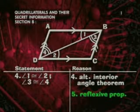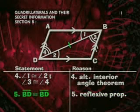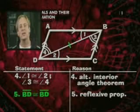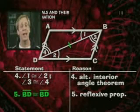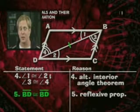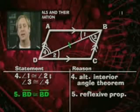So for our fifth step, we'll use the reflexive property to set BD congruent to itself. Now we have two pairs of congruent angles established. We can use the angle-side-angle postulate if we can show that the included sides are congruent. This is simple, because side BD is shared by both triangles.